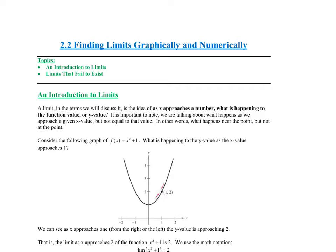X values are left to right, so as we go to a certain X value — say the number five — what happens to the Y value of that function? A key point: we're not looking at the X value itself; we're looking near that given X value. The X value doesn't even need to be defined at that point. It's just what's happening near the point — that word 'near' is very important to us.